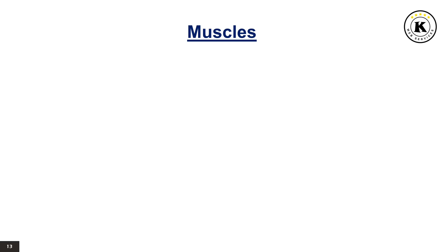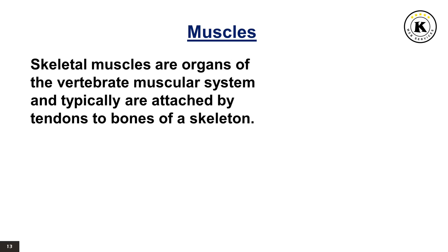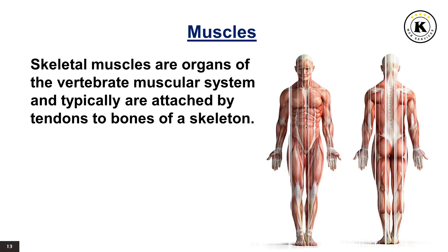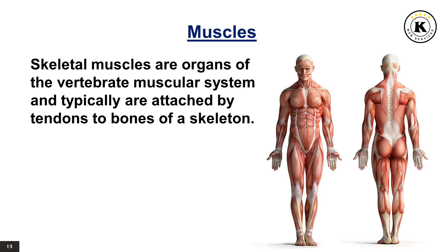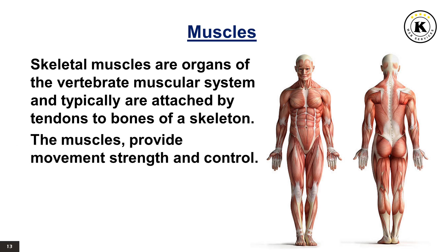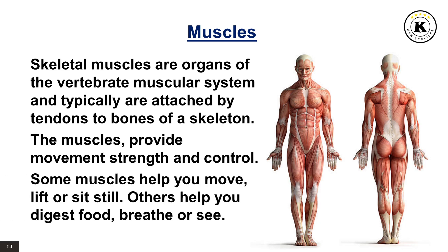Muscles. Skeletal muscles, commonly referred to as muscles, are organs of the vertebrate muscular system and typically are attached by tendons to bones of a skeleton. The muscles provide movement, strength, and control. You have more than 600 muscles in your body. Some muscles help you move, lift, or sit still. Others help you digest food, breathe, or see.